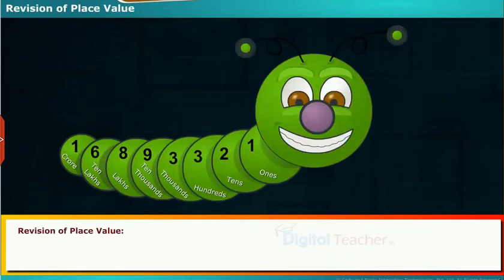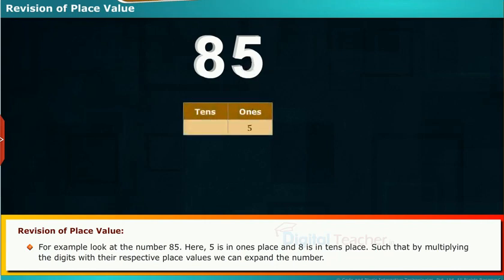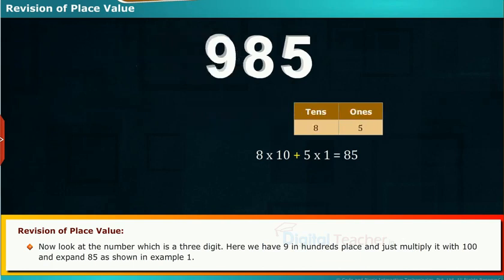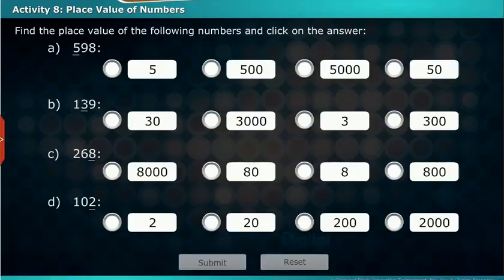Revision of place value: Let us revise how to expand a number using place value. For example, look at the number 85 — 5 is in the 1s place and 8 is in the 10s place. By multiplying the digits with their respective place values, we can expand the number. Now look at the number 985, a 3 digit number — 9 is in the 100s place. Multiply it with 100 and expand 85 similarly. Let us perform an activity on place value of numbers.